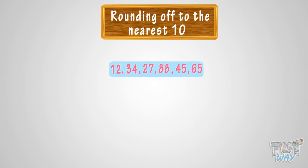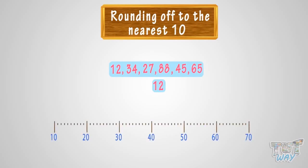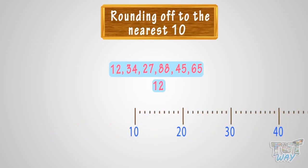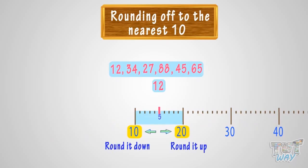Let's start with 12. See the number line — where can you fit 12 on this number line? It is somewhere between 10 and 20. Whenever you want to round a number, there are always two options. Either we can round it down to 10 or round it up to 20. Think — which option do you think is more apt?